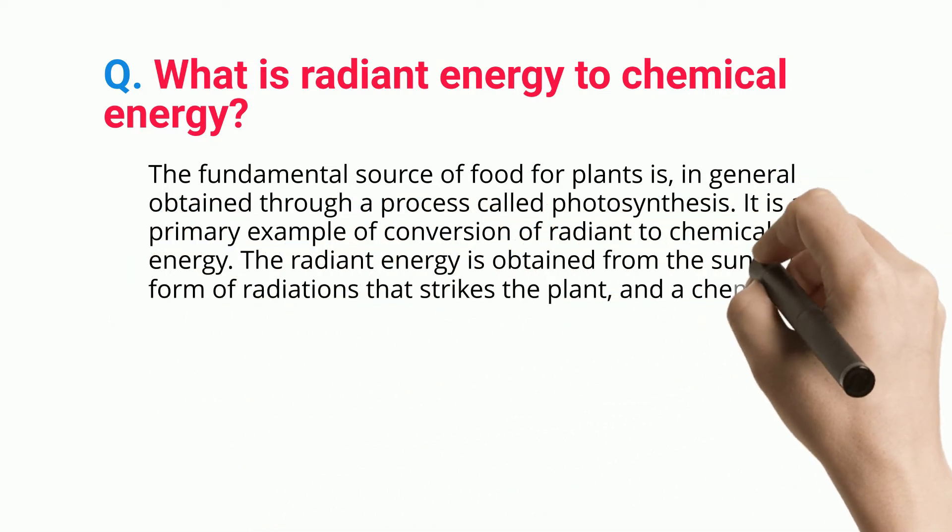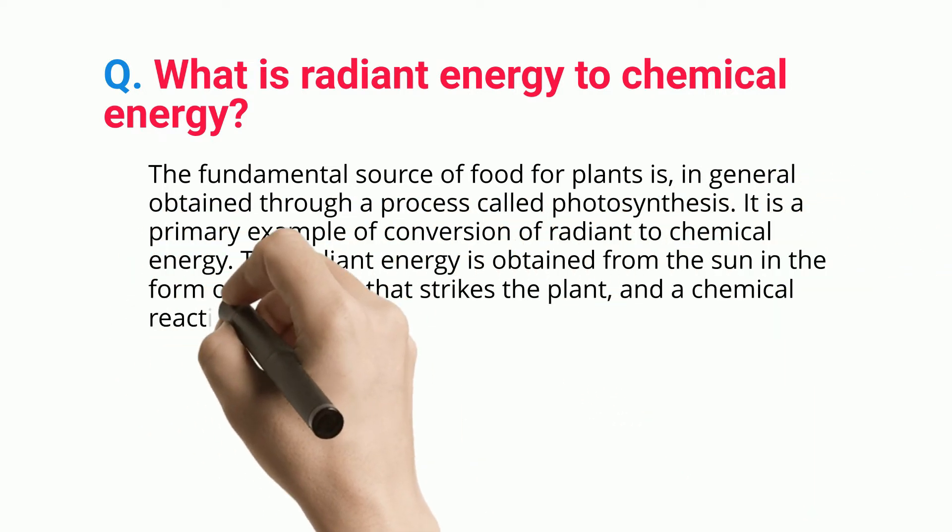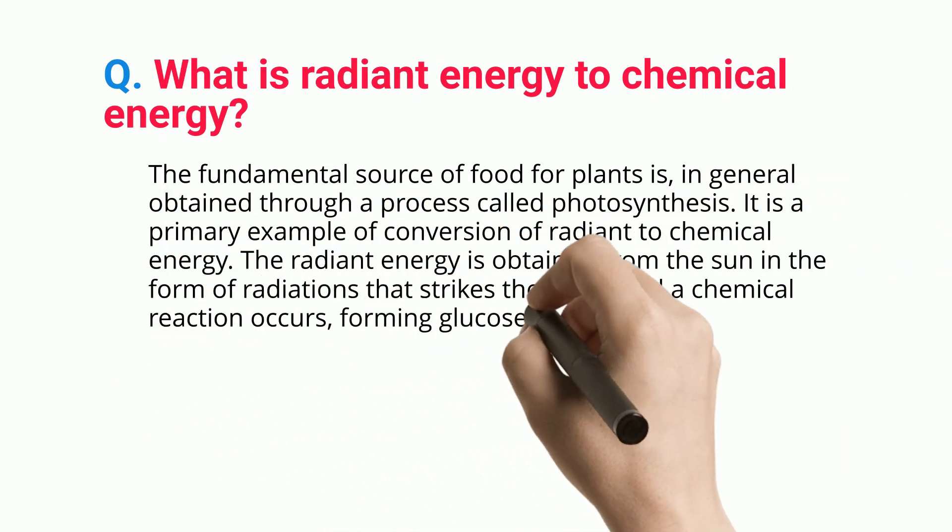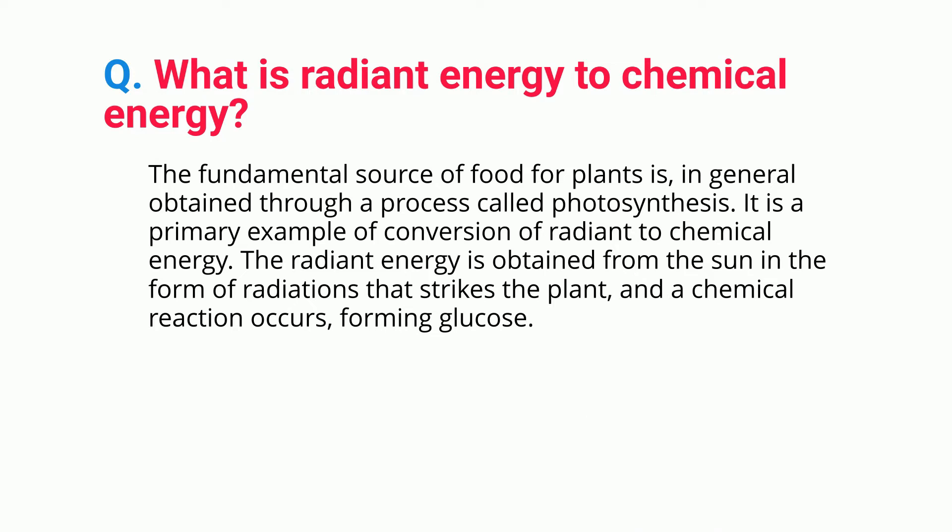The radiant energy is obtained from the sun in the form of radiations that strikes the plant, and a chemical reaction occurs, forming glucose.